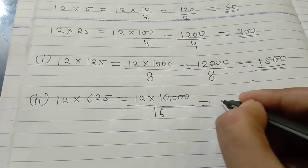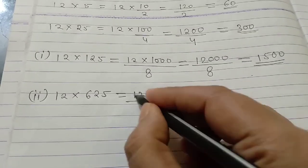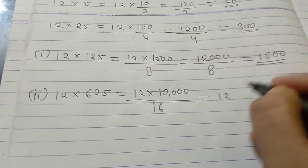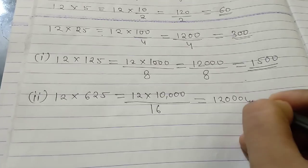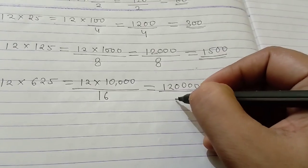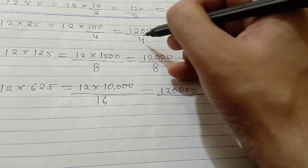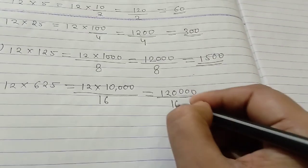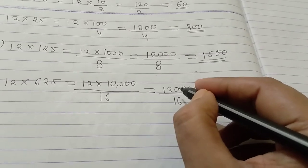Now, we can multiply the number. 12 times 10,000, number of 4 zeros will be added. See, number of 4 zeros has been added giving 120,000. Now, coming to the denominator of this number, 2, 4, 8, 16. So, we have written here, 16.